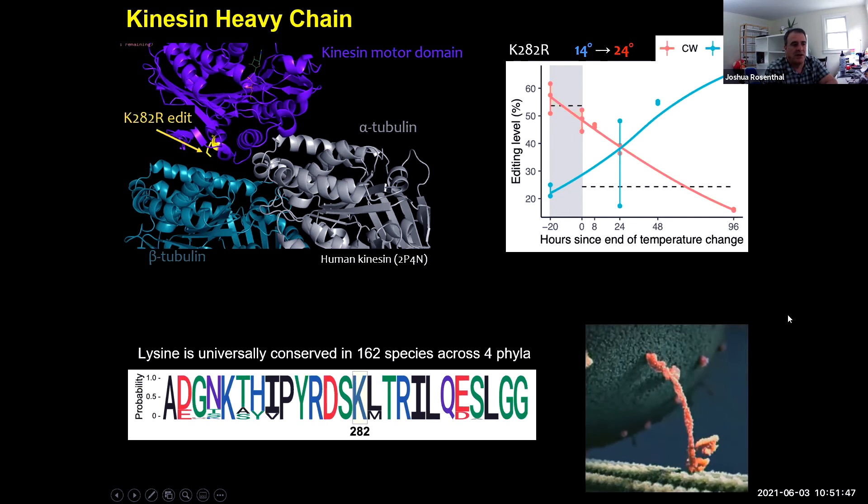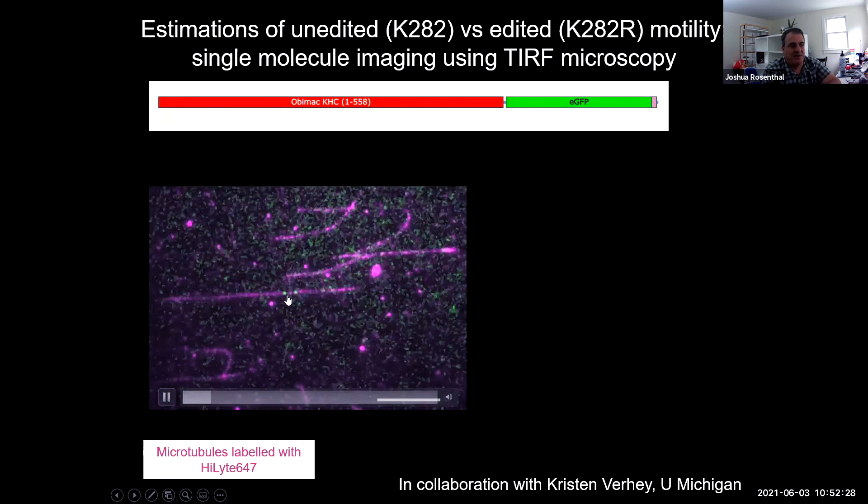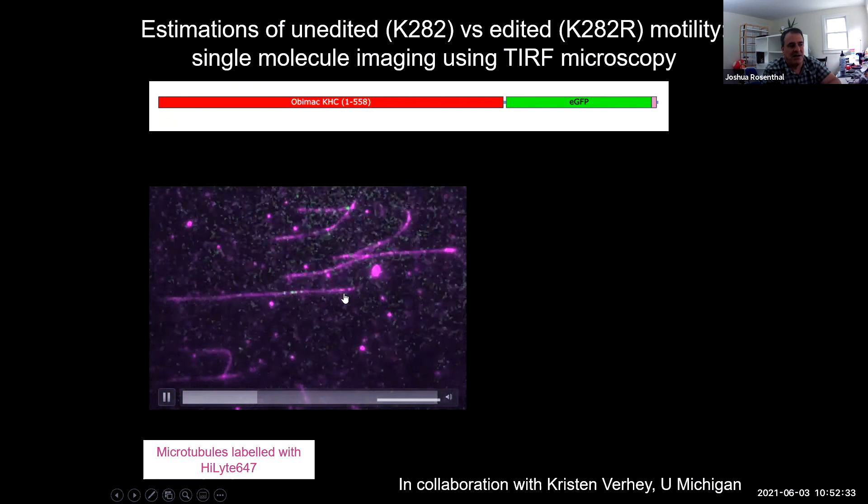So the way we just started looking at this was we made this motor domain of kinesin with part of the stalk and attached GFP to it. This is a fairly standard approach for the people who look at kinesin for a living. And then we are starting to look at the dynamics of the edited and the unedited versions as they move across microtubules. So here, take a look at the spot. This is looking at the recombinant octopus kinesin moving across microtubules via using TIRF microscopy. And you can see here an example of movement. This is the unedited kinesin as it moves across the microtubule.